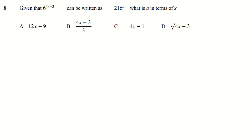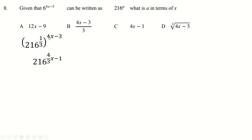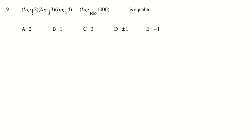This one's not too tricky either, because we can write 6 as 216 to the power one third — just knowing your powers of 6 is quite helpful. Then we times out these powers because there's brackets, and we end up with the answer pretty much immediately once we separate that out, and we have the answer of b very quickly.